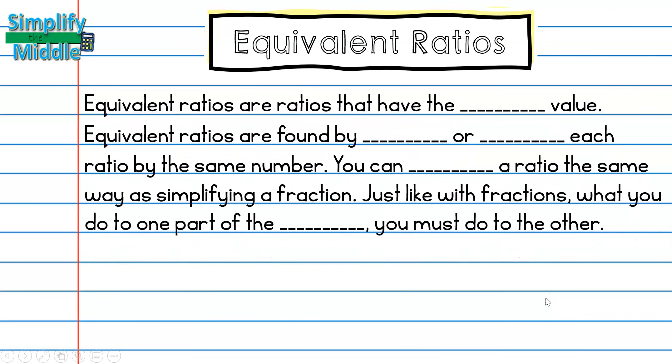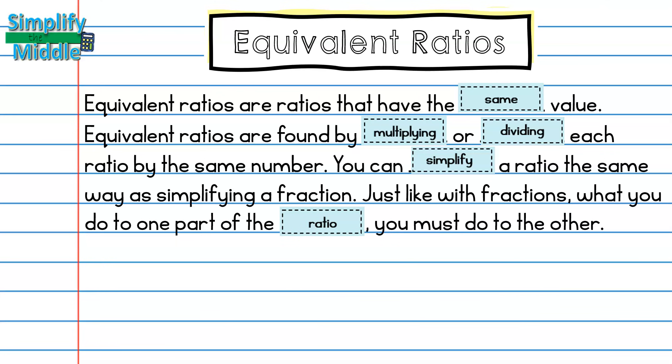Let's recap. Equivalent ratios are ratios that have the same value. Equivalent ratios are found by multiplying or dividing each ratio by the same number. You can simplify a ratio the same way as simplifying a fraction. And just like with fractions, what you do to one part of the ratio, you must do to the other.